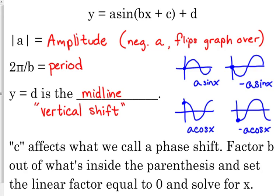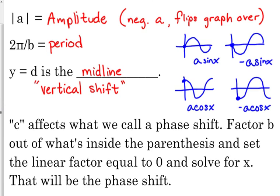Now, c is the new thing. We didn't talk about c yesterday. The coefficient of c affects what we call the phase shift. What it's going to do is it's actually going to be that horizontal movement of the function. So what you need to do to figure out what your phase shift is, you've got to factor b out of what's inside the parentheses. And then the linear factor that you're left with, you're going to set it equal to 0 and solve for x, and that is your phase shift. I'm going to show you here in a second.